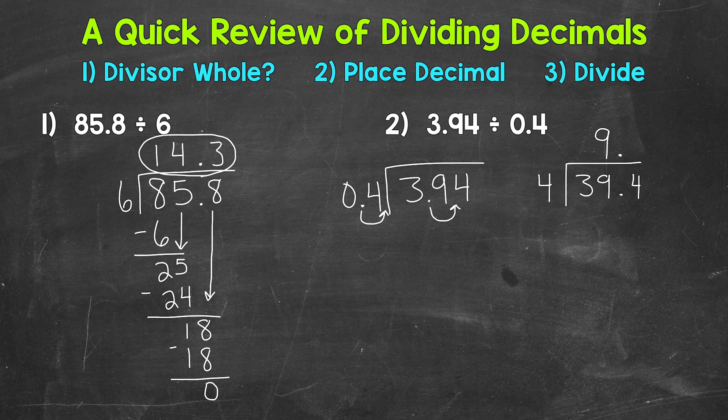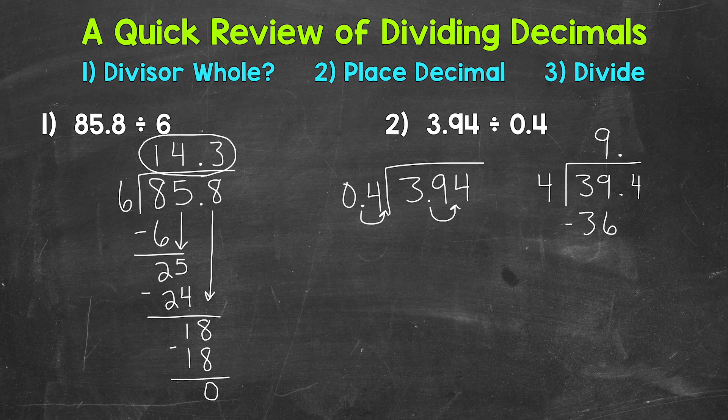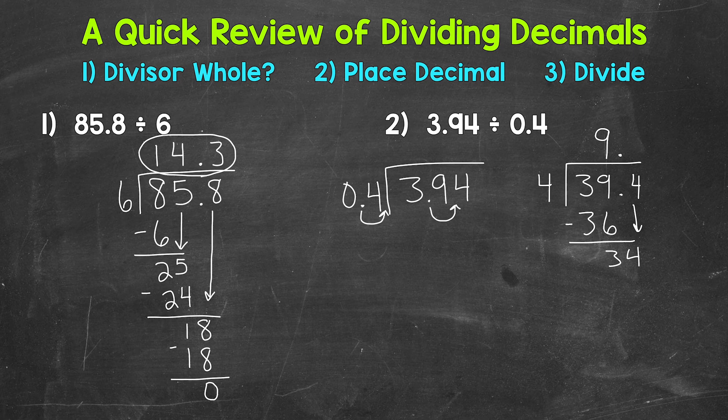Now we multiply. So 9 times 4, 36, subtract, we get 3. Then we bring down and repeat.